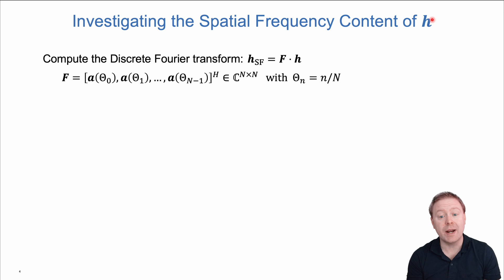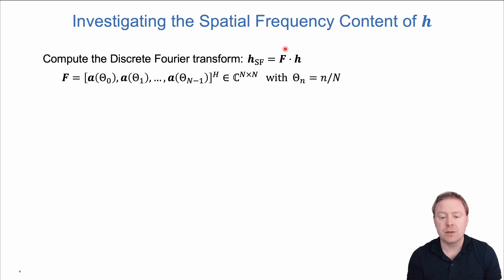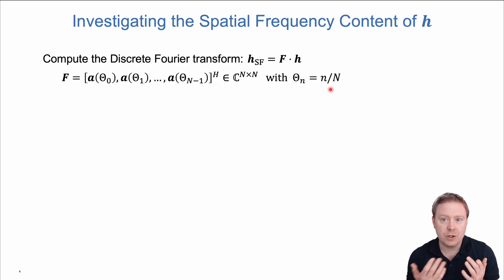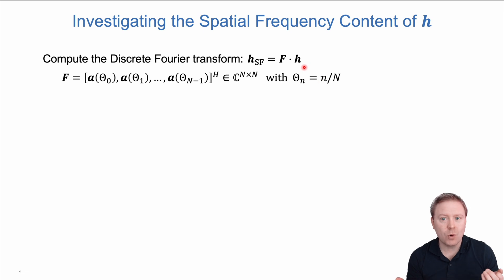Given a channel vector h, we can analyze its spatial frequency content by multiplying it with a DFT matrix. Interestingly, the DFT matrix can be described using far-field array response vectors for equally spaced directional cosines, going from 0 up to (N−1)/N—a kind of normalized spatial frequency. What we are doing is essentially taking a spatial DFT: normally we take time-domain signals and apply the DFT, but here we obtain the spatial frequencies.